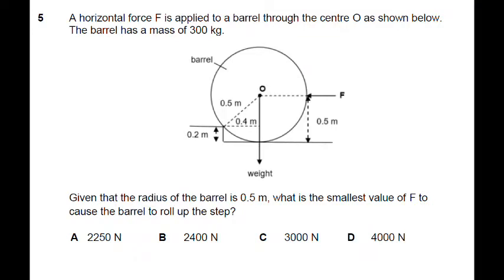In this moment question, you are required to find the minimum force that is required to push the barrel up the steps. It is very important that you are able to identify that this point is the pivot and that F is creating an anti-clockwise moment about the pivot while the weight is creating a clockwise moment.